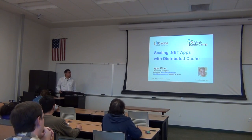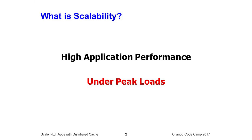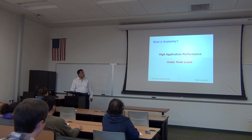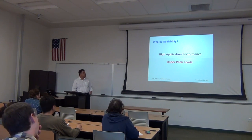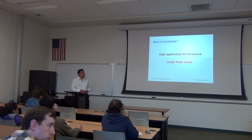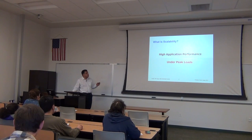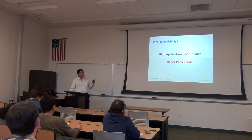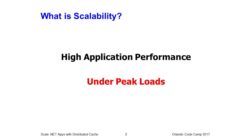Let's get a few definitions out of the way first. The first definition is scalability. Scalability is not application performance. If you have five users and your application performs super fast, your application is not scalable until it can have the same good performance with five thousand, fifty thousand, or five hundred thousand users. So scalability is about high performance under peak loads. Your application may not have good performance with five users, in which case caching was not going to help you — you have other issues to solve.